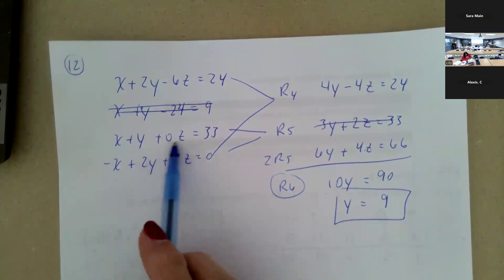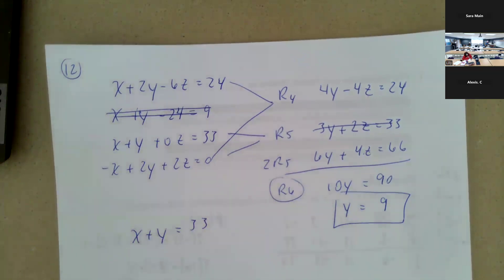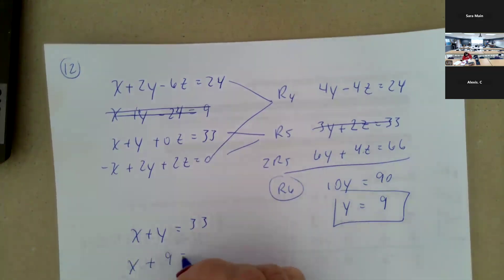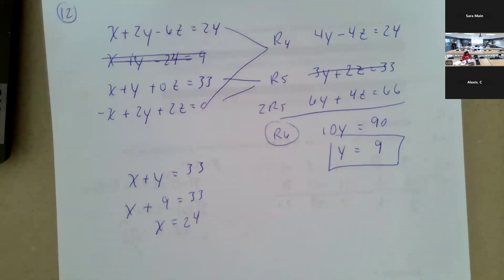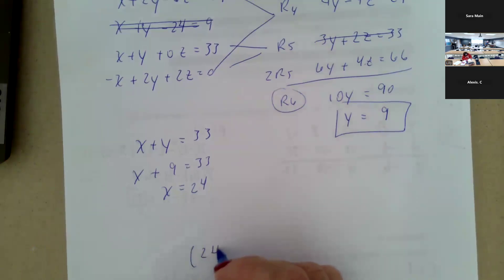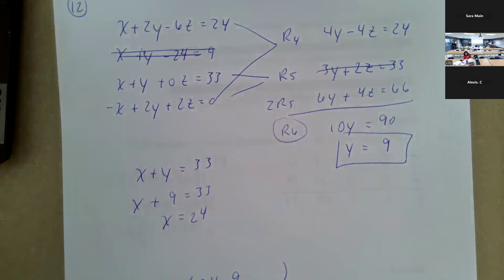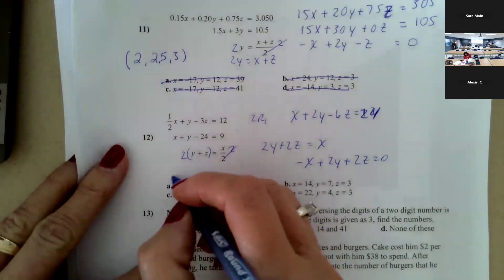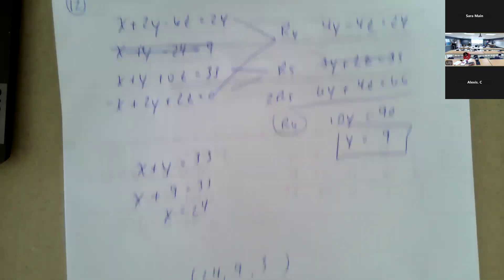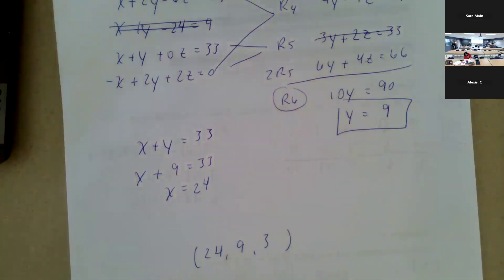In row two, there are no z's, just x and y: x plus y equals 33. Substituting y equals nine: x plus nine equals 33, so subtracting nine gives x equals 24. So far I have 24 and 9. We've done so many of these — skipping ahead, we can see that the answer is letter A: 24, 9, and 3. So that ends this video. Catch us back for the next video — we're going to look at the story problems.